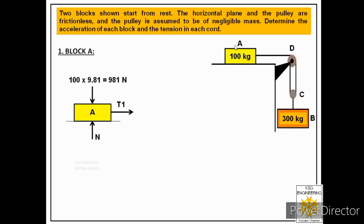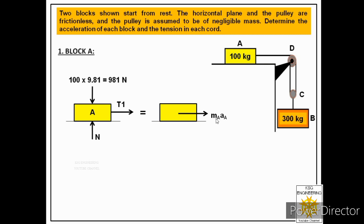Now let us consider the motion of block A. Since we need to find the acceleration of each block, and the 300 kg block moves downward, block A is pulled to the right. The forces acting on block A are responsible for its acceleration towards the right, so we can write: summation F = m·aA.